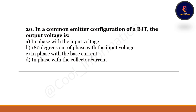Last question of this entire session: In a common emitter configuration of a BJT, the output voltage is — option A: in phase with the input voltage. Option B: 180 degrees out of phase with the input voltage. Option C: in phase with the base current. Option D: in phase with the collector current. The correct option is B — 180 degrees out of phase with the input voltage.